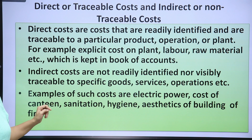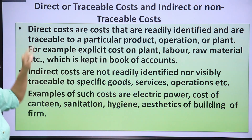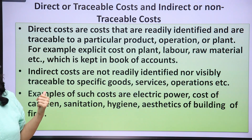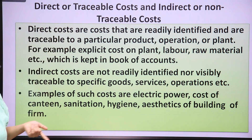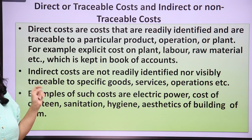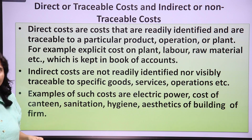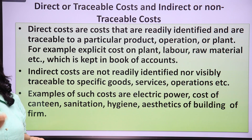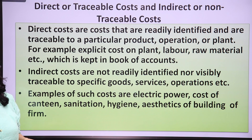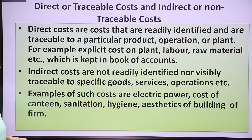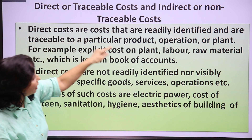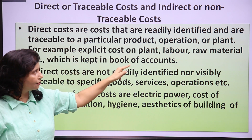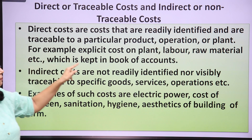Now let's look at direct or traceable cost and indirect or non-traceable cost. Direct costs, also known as explicit costs or accounting costs, are costs that are readily identified and traceable to a particular product, operation or plant. For example, explicit costs on plant, labor, raw material, etc., which are kept in the book of accounts — you record all these costs in the book of accounts.